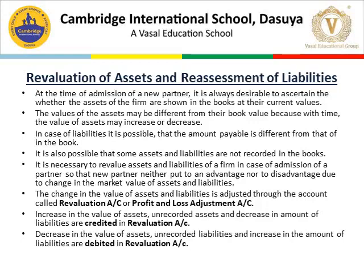The change in the value of assets and liabilities is adjusted through the revaluation account, also called the profit and loss adjustment account. This account deals with: increase in the value of assets, unrecorded assets, or decrease in the amount of liabilities — these are credited. Decrease in the value of assets, unrecorded liabilities, and increase in the amount of liabilities are debited.